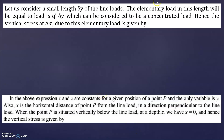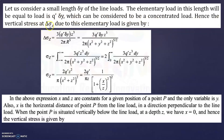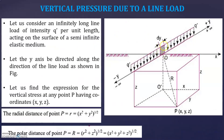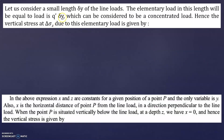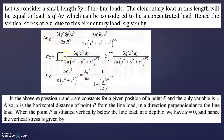Now let us consider a length delta-y of the line load. The elementary load over this length equals q-dash × delta-y, which can be considered as a concentrated load. Hence the vertical stress delta-sigma-z due to this elementary load is given by the corresponding equation. Once you get the equation for a small length, you can find it for the entire length.